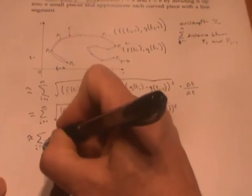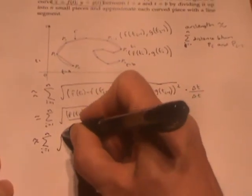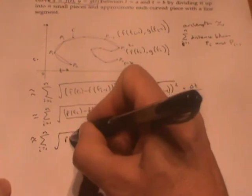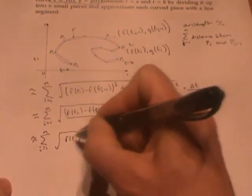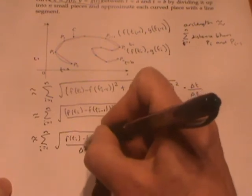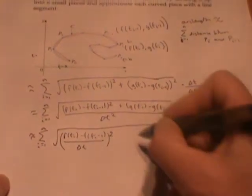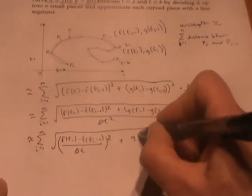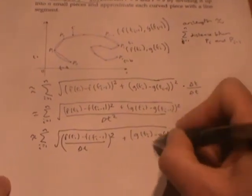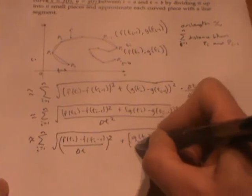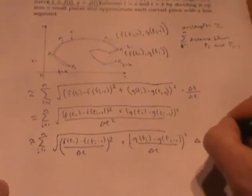Rewriting this again by breaking up the fractions—and I still have the delta t out here, that came from the top.